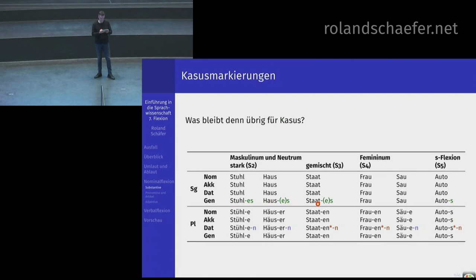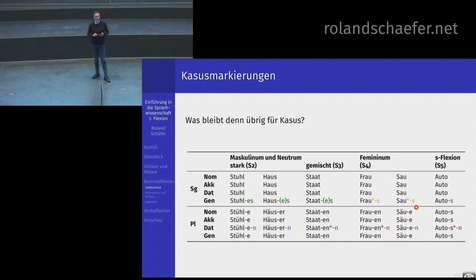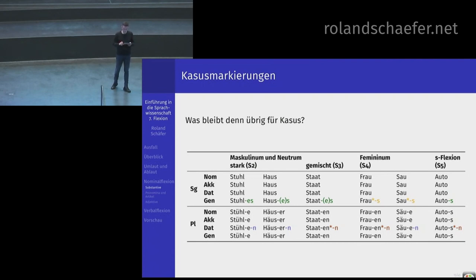Im Genitiv-Singular steht ganz oft ein S hinten dran – außer bei Frau und Sau. Die Formen der Fraus und der Saus gibt es nicht. Warum nicht? Das hat keine phonologischen Gründe, weil Fraus ja sogar ein Wort ist, wie in Saus und Braus. Bei Femininer im Singular Genitiv wird nie ein S angehängt – das ist einfach markant für die Femininer, für alle. Und das ist der Grund, warum wir das als Genitiv-Kennzeichen betrachten.